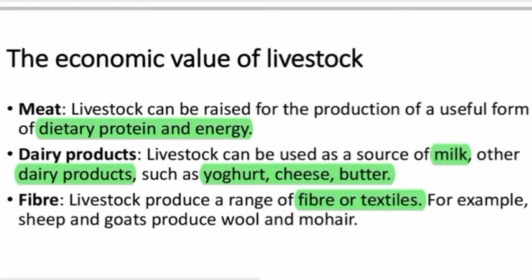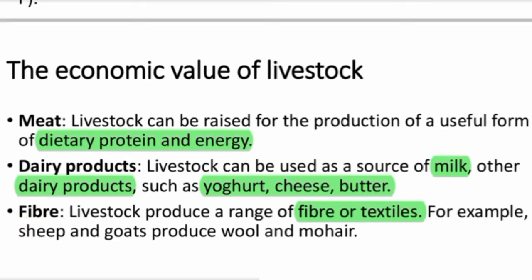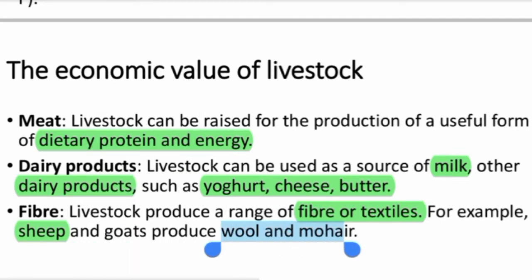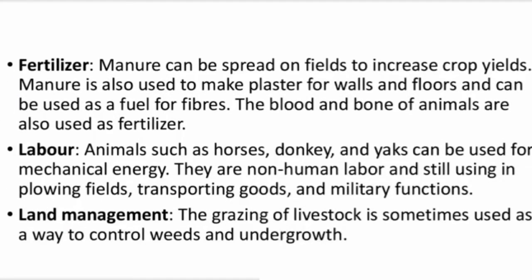Livestock can be used to produce wool and other hair fibers. Manure can also be spread on fields to increase crop yield. Manure is also used to make plaster for walls and floors, and can be used as fuel for fibers. The blood and bone of animals are also used as fertilizer.